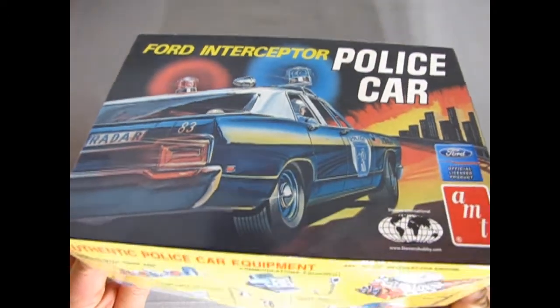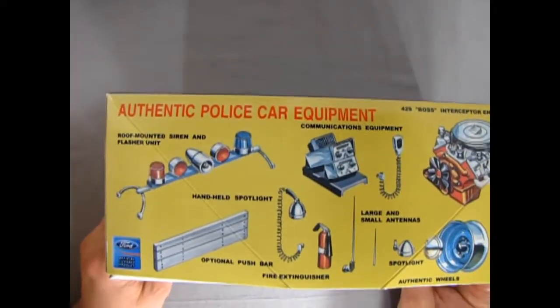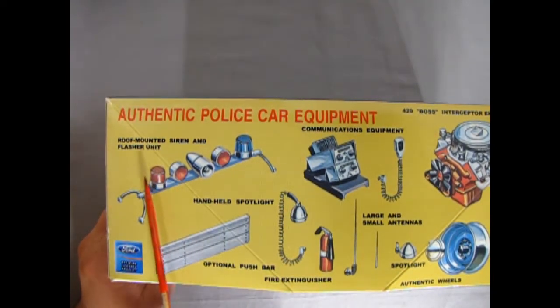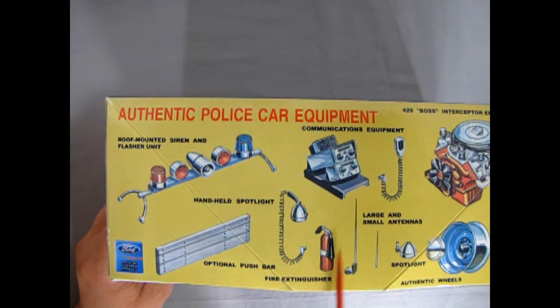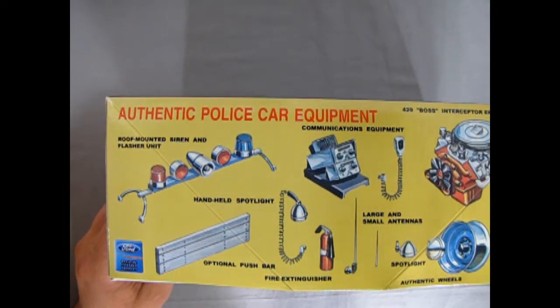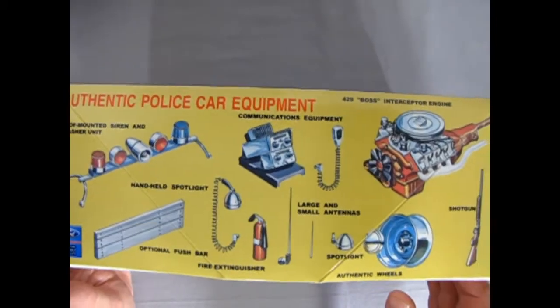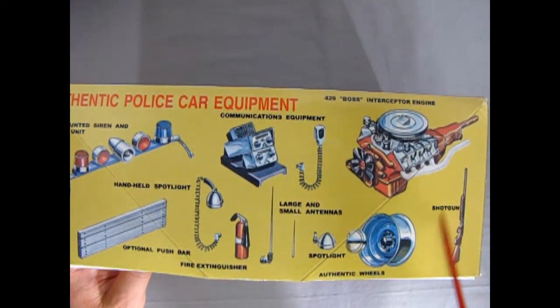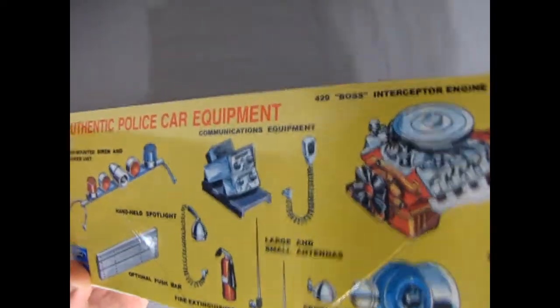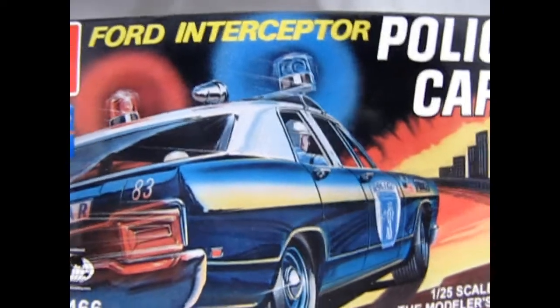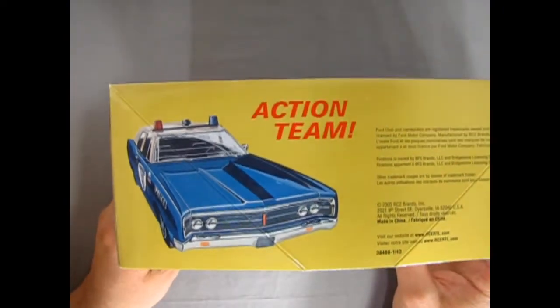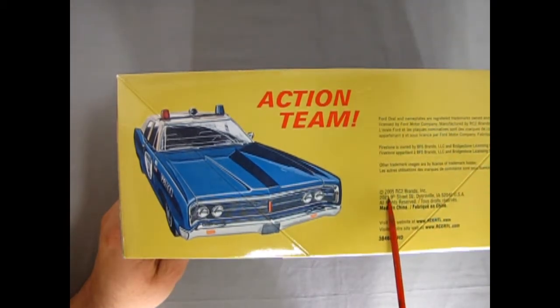If we flip up this box here we can see the groovy pieces that come in this kit, which includes authentic police car equipment: the roof mounted siren and flasher unit, the handheld spotlight, optional push bar, fire extinguisher, communications equipment right out of 1970. There's our antennas, large and small spotlights, authentic wheels with the dog dish hubcaps, and the 429 Ford Boss Interceptor engine, as well as this amazing shotgun just to slow down the crazy folks out there.